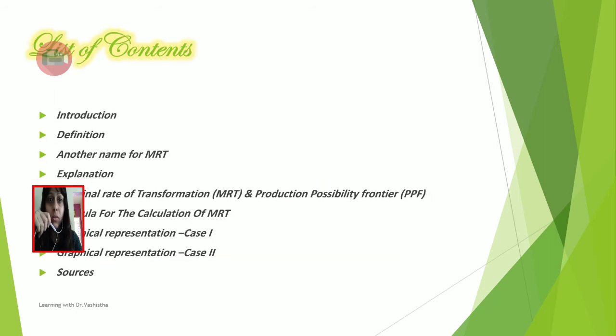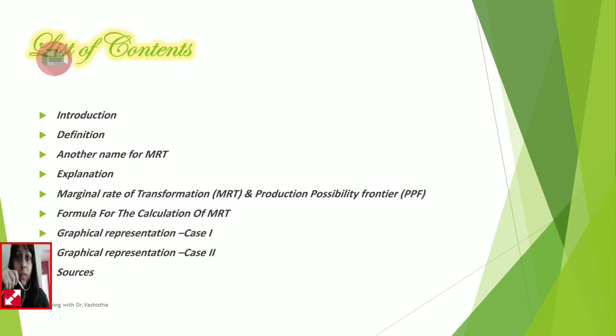So this is the list of content. We'll start with the introduction and definition, then another name by which MRT is known. Then there will be the explanation part, followed by the relationship between MRT, that is marginal rate of transformation, and PPF, which is production possibility frontier. There will be discussion over the calculation of MRT and then graphical representation of the same.